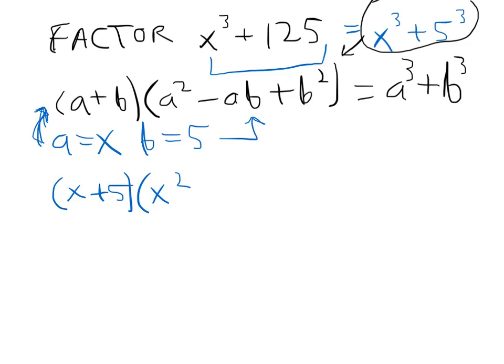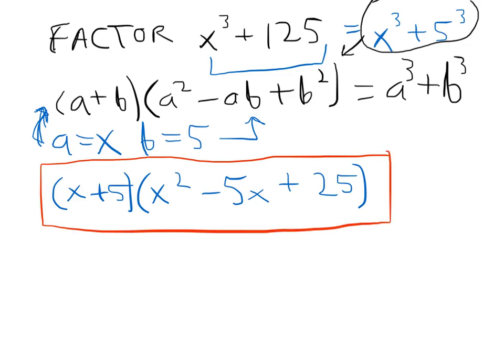So we're gonna say it must be x plus 5 times x squared. Let's go ahead and show you the laser pointer. We take the a, which is x, and we put it in here and we square it. So then we go minus a times b, which gets us 5 times x. And then plus b squared, in this case it's 5 squared, that's 25. So it turns out those are the factors of x³+125, and we'll go ahead and box that. That is our final answer.